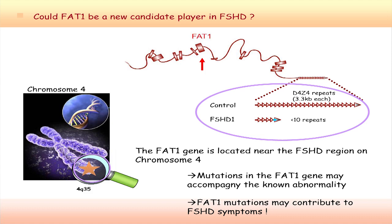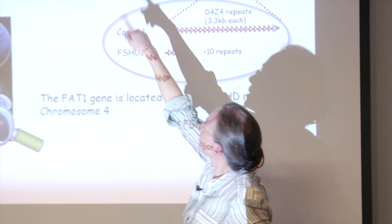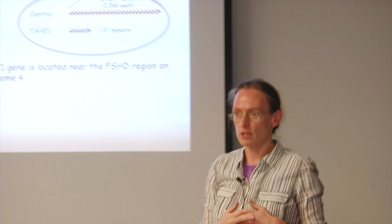So if you have the repeats here, you have a few more genes, that's the string of DNA, and then you hit the FAT1 gene. So that was basically, together with the similarity, that location made FAT1 be a compelling, provocative, possible new player in the disease.